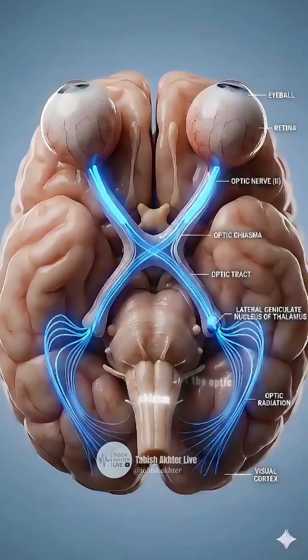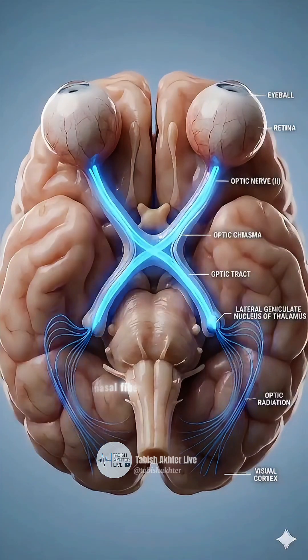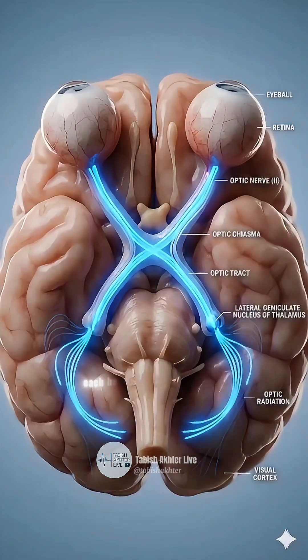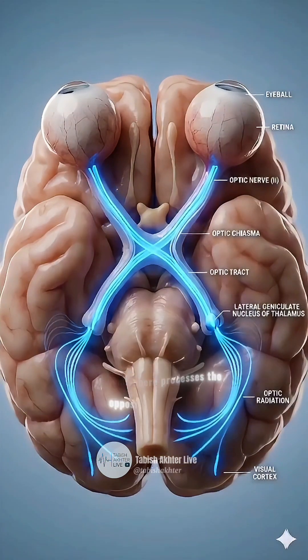At the optic chiasm, nasal fibers cross, ensuring each hemisphere processes the opposite visual field.